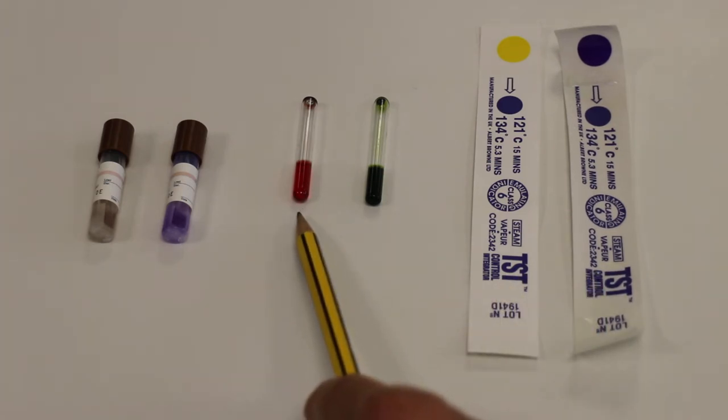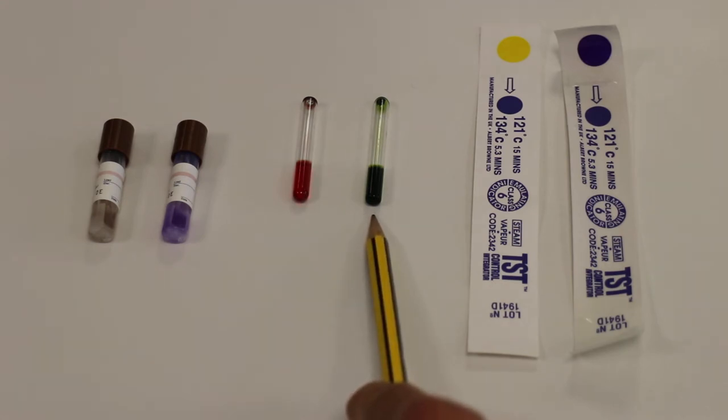This was the browns tube before it had been autoclaved and this was after it had been autoclaved, indicating a positive result.